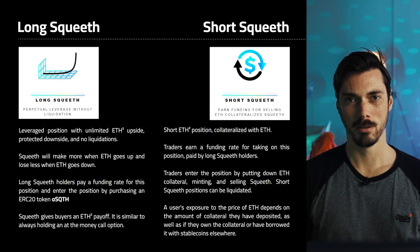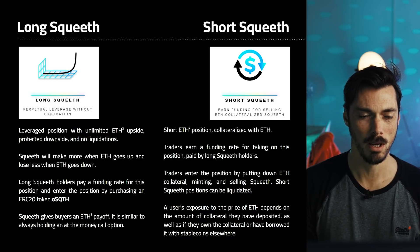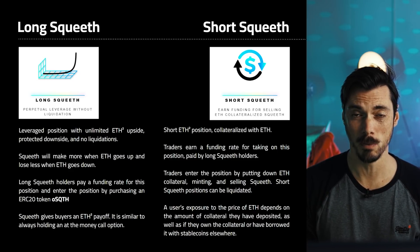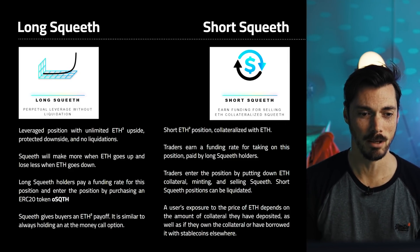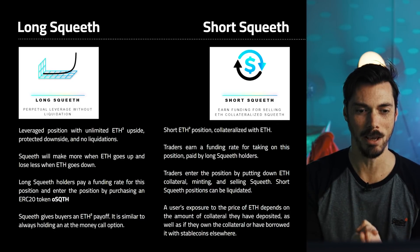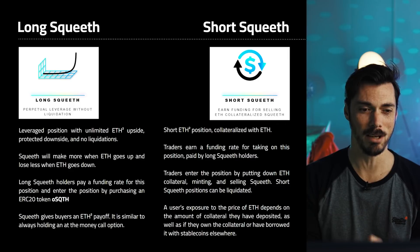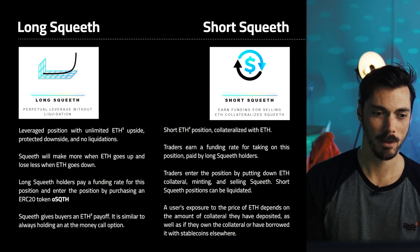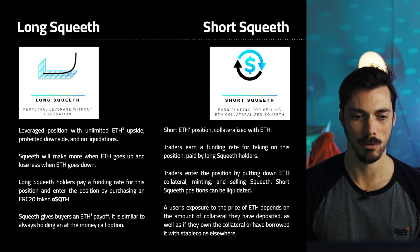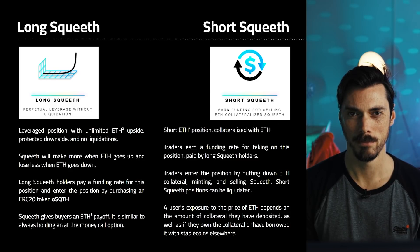Here are the two products you'll probably encounter to begin with. Long Squeeth is a leveraged position with unlimited ETH squared upside, protected downside and low liquidations. Squeeth will make more when ETH goes up and lose less when ETH goes down. However, you pay a funding rate for that position, and to enter it you purchase this ERC-20 token called OSQTH with ETH. Squeeth gives buyers an ETH squared payoff and it's similar to holding an always at-the-money call option.